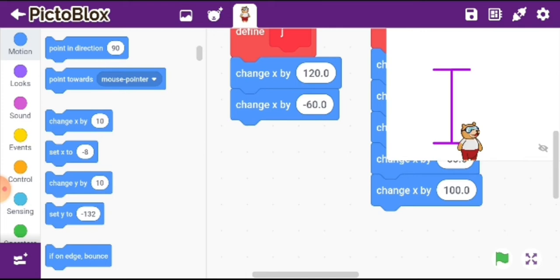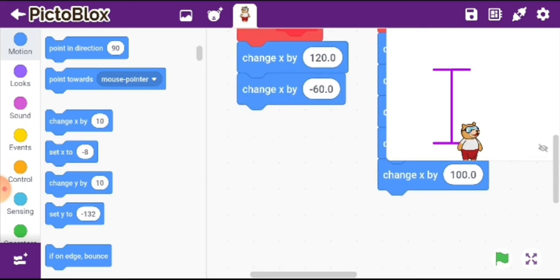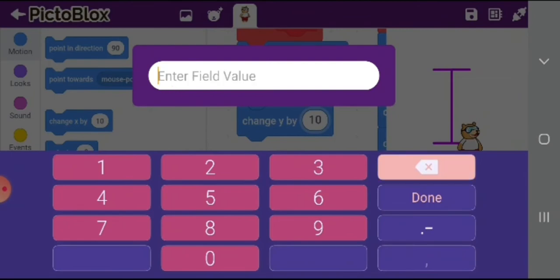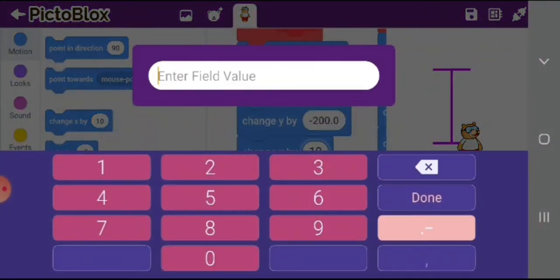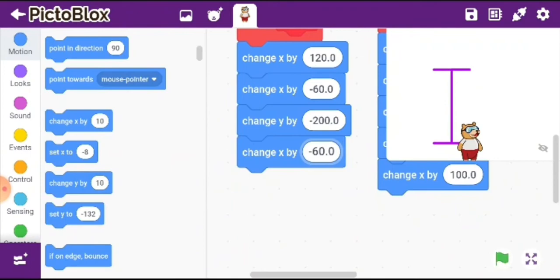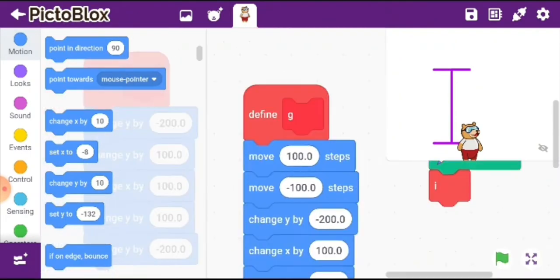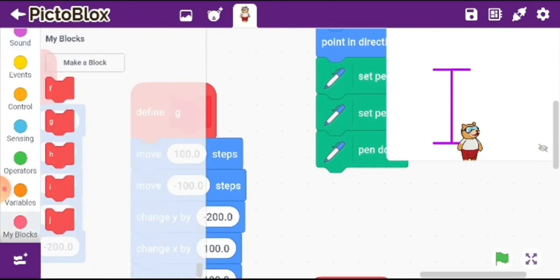Then we'll come down by minus 200 and then this will be minus 60 x. Now let us connect J to the main script. This was our last alphabet. Let us see how our last alphabet looks and it's really very perfect.